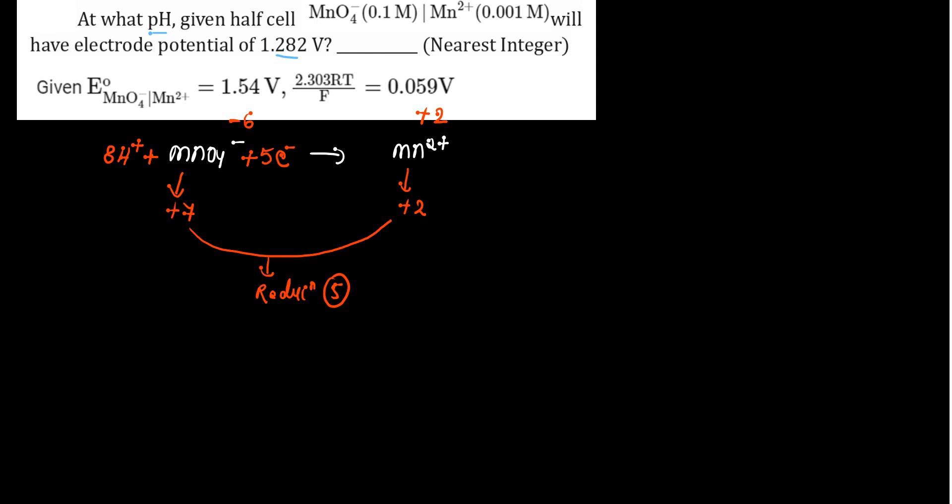And then for balancing oxygen, left my 4 oxygen and right my 2 oxygen, add 4 H2O. So we have balanced equation mil gaya. Once we have the balance equation, then next equation apply karenge.